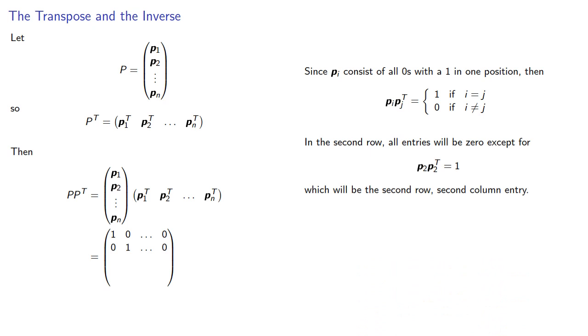And in general, all entries in the ith row will be zero except for the entry in the ith column. The ith row, ith column entry will be one, and our product will be the identity matrix.